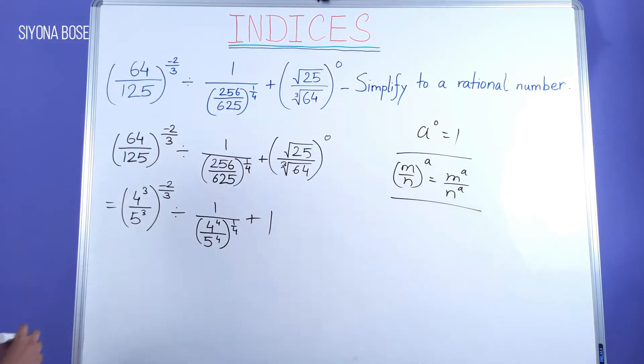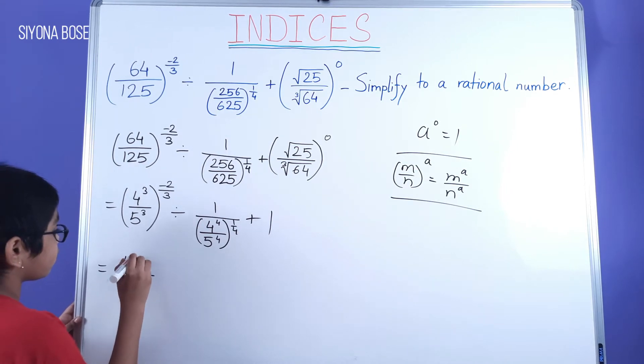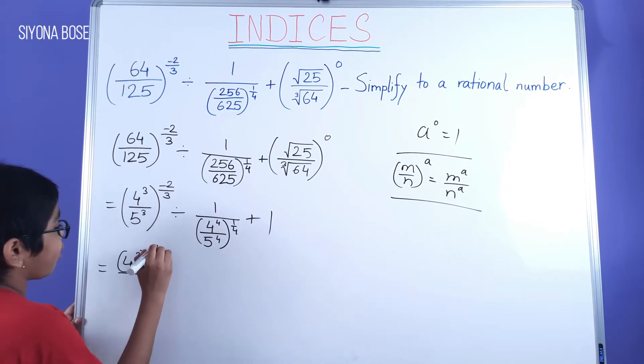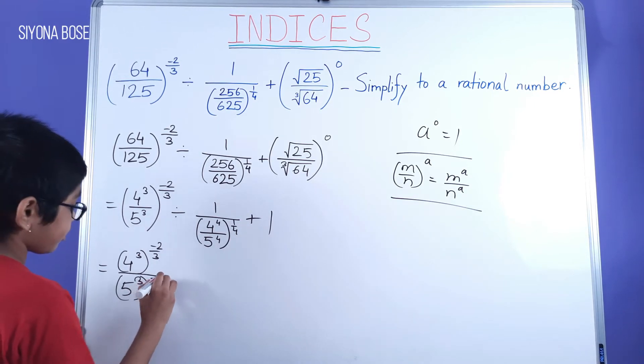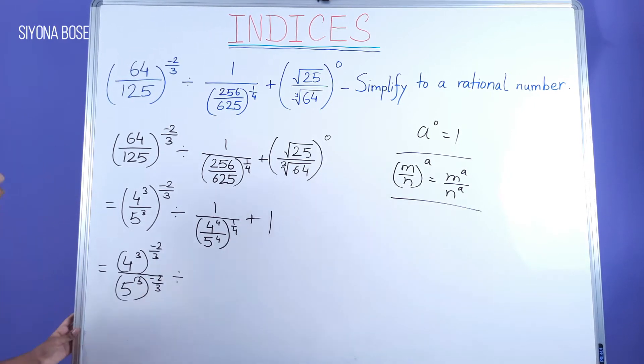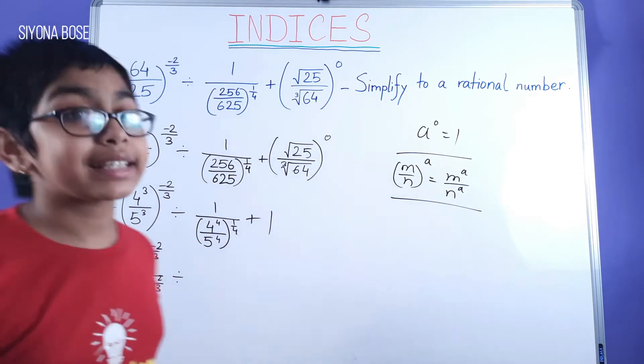Keeping that in mind, we get 4 cube hold the power of minus 2 by 3, 5 cube hold the power of minus 2 by 3. Divided by, over here also, we apply the same thing. This whole fraction is actually in the denominator.